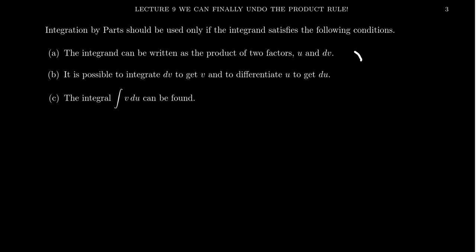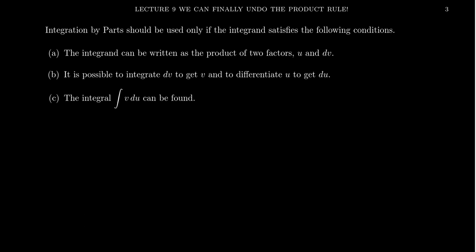In other examples we'll see in this video, the factorization will be obvious. In some situations, though, if you have a function f(x) and the factorization is not obvious, you should always look at the dx. The dx is part of that, and sometimes that's the factorization you use — f(x) times dx. That might seem unhelpful, but we'll see some examples of exactly what that means. We do have to think of how it's going to factor.